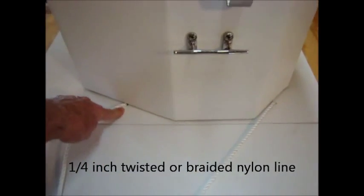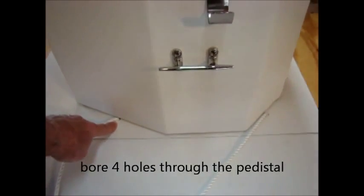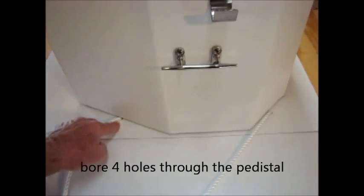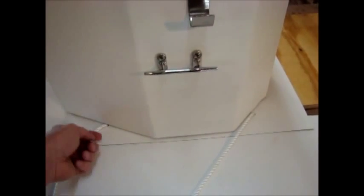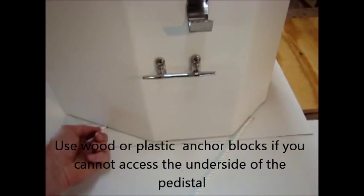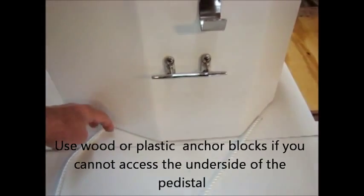It goes through a hole in the pedestal for the toilet and there's a knot tied on the bottom side. If you cannot access the bottom side of the pedestal, you simply put a piece of block of wood here with a hole drilled in it and space on the underside where the knot can be tied and seated, and then you run two screws down into the pedestal.